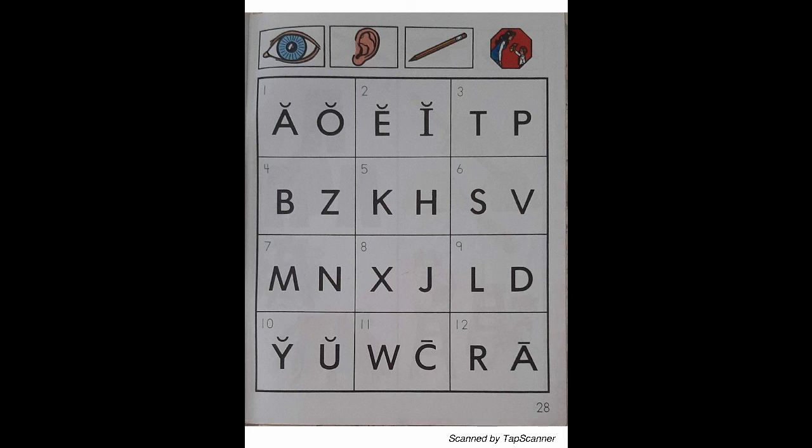Look at the letter in box 6. Listen as I say the sound of the letter: "S" — Sunfish — "S". With your pencil, circle the letter that reads "S".